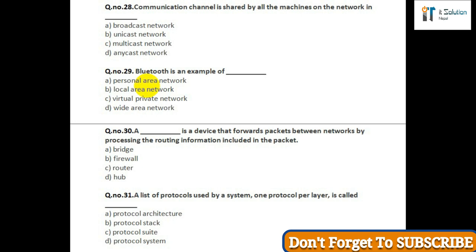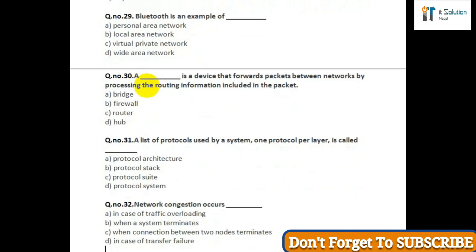Question number thirty-one: A list of protocols used by a system, one protocol per layer, is called — option A: protocol architecture; option B: protocol stack; option C: protocol suite; option D: protocol system. Question number thirty-two: Network congestion occurs — option A: in case of traffic overloading; option B: when a system terminates; option C: when a connection between two nodes terminates; option D: in case of transfer failure.